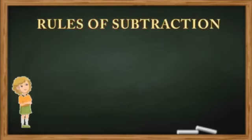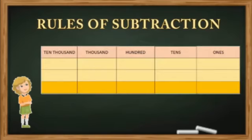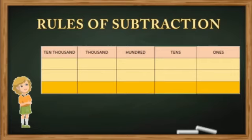Dear students, there are certain rules to subtract numbers. For subtracting, we need to arrange the numbers in columns according to their place value — ones, tens, hundreds, thousands, and so on. Then we are able to subtract ones, tens, hundreds, thousands, and ten thousands separately. Here is an example using five-digit numbers, placed in columns: ones, tens, hundreds, thousands, ten thousands.